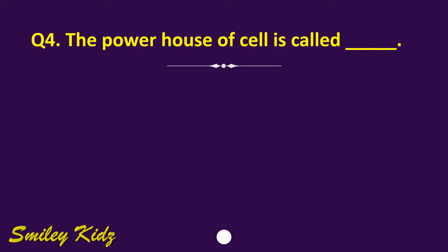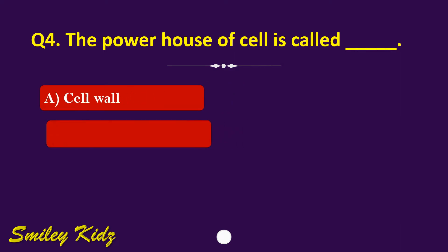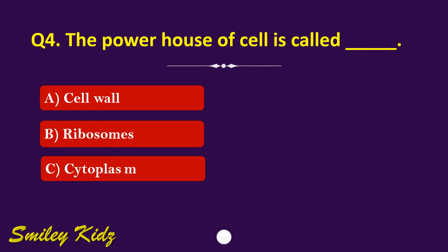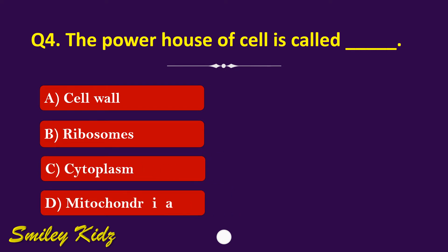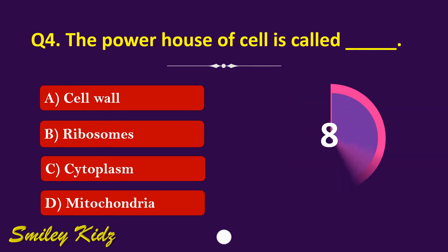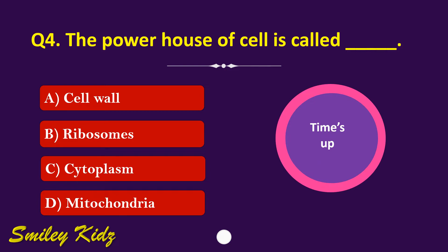Question number 4. The powerhouse of the cell is called dash. The options are: A. Cell wall, B. Ribosomes, C. Cytoplasm, or D. Mitochondria. Your time starts now. Your time is up and the right answer is option D. Mitochondria. The powerhouse of the cell is called mitochondria.